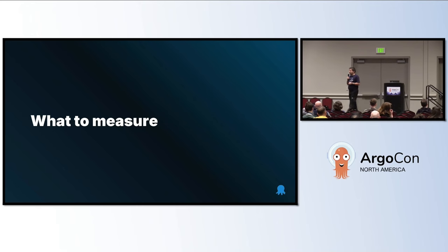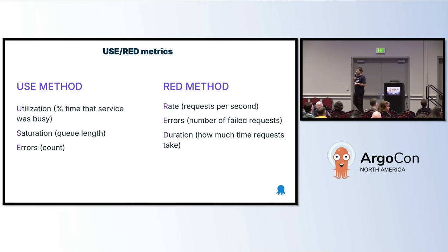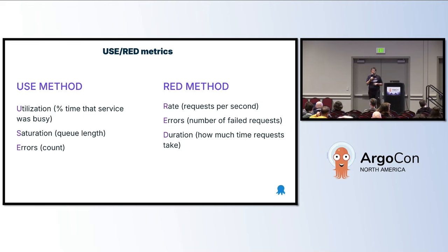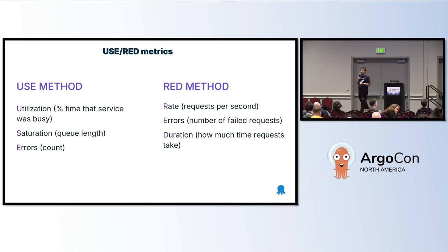If you don't have the metrics in place, what metrics do you actually need? There was a suggestion to use the USE method — utilization, saturation, and errors — which is usually coming from hardware. Maybe it's not applicable to software, but if you have an application with an internal queue, you can use it. The recommendation specifically for web services is the RED method: rate, errors, and duration for each service. You get how often the service is used, if it's successful or not, and how long it takes for a request to happen.